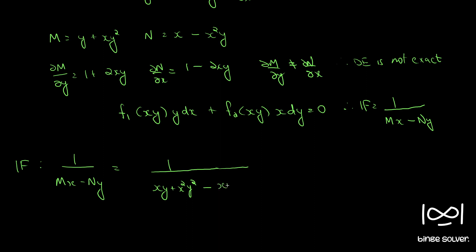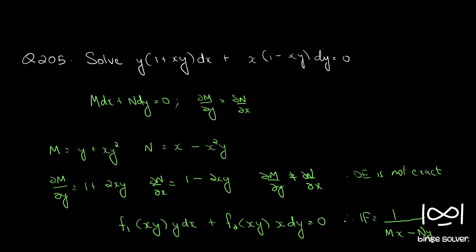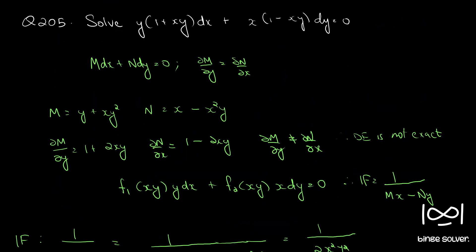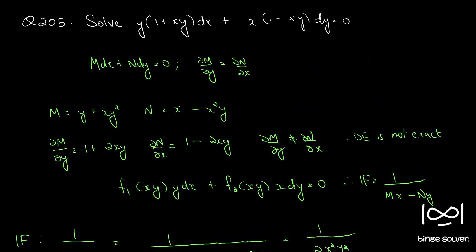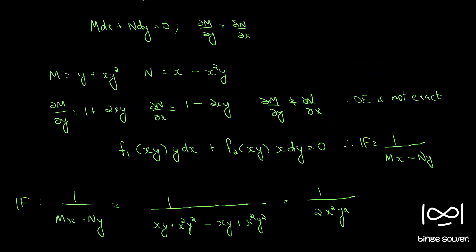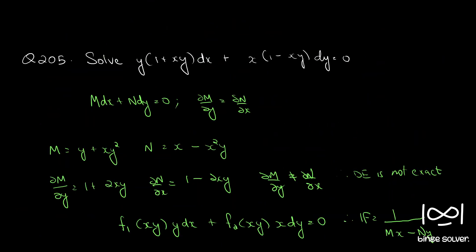This gives 1/(2x²y²) as our integrating factor. If we multiply the equation by 1/(2x²y²) — let me copy this onto a new page so that it will be easier.